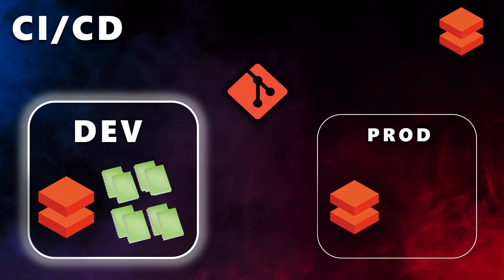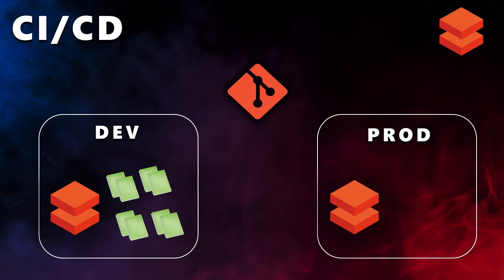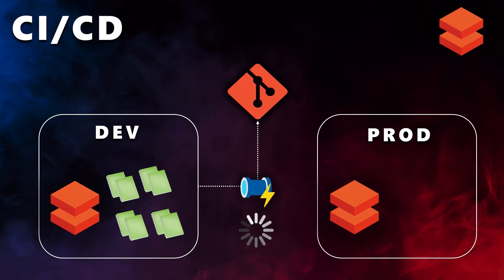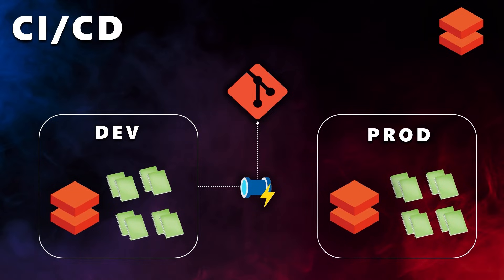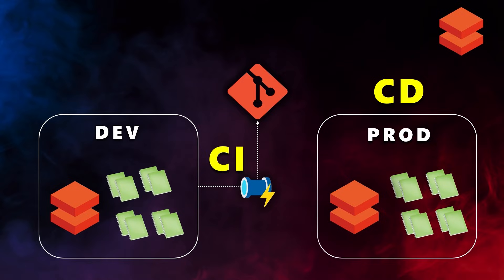We'll be doing all our code changes only in the dev Databricks workspace. Once we have completed all our work, we can commit all our changes to the Git repository, which means we are saving all our code to the repository. As soon as you commit the changes to the Git repository, the CICD pipeline will get triggered, and the pipeline will get the latest changes from the dev environment and deploy all the latest code to the production environment. The part where we integrate the dev changes to the repository is called continuous integration, and the part where we deploy all the latest code from dev to prod is called continuous deployment — together this is called CICD.